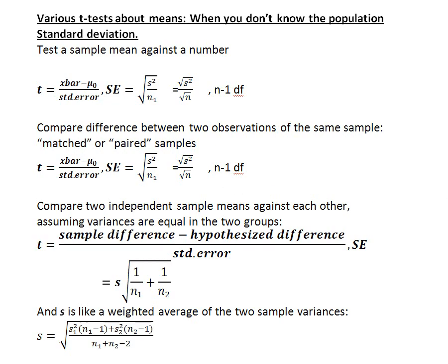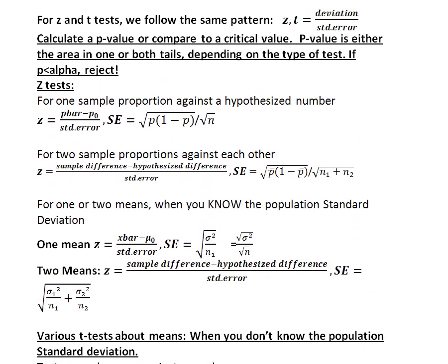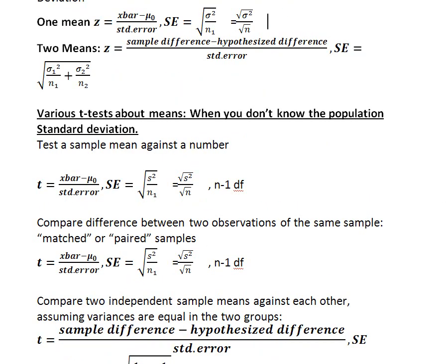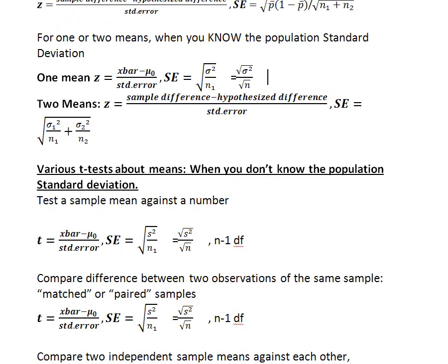In the last video we looked at various kinds of z-tests, and we said that you should focus on the idea that all these formulas have the same pattern. A z or a t is equal to some difference between two numbers — a deviation — divided by some kind of standard error. All you have to do is figure out what two numbers form the deviation and how to calculate the standard error. We went through z-tests and now we'll talk about t-tests.